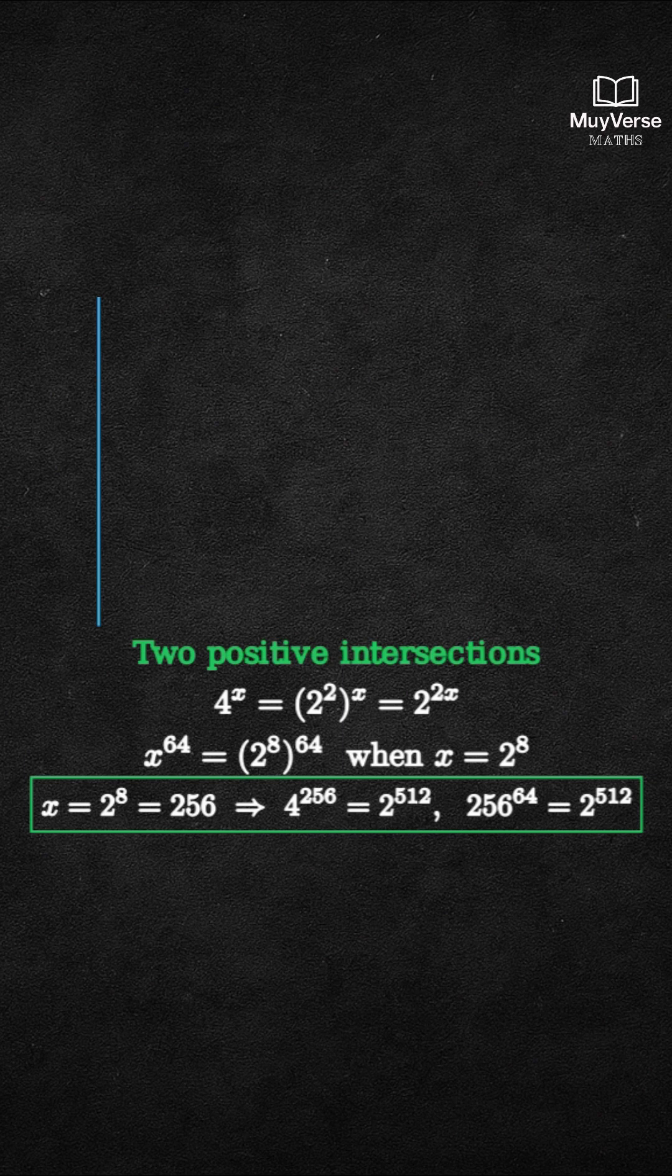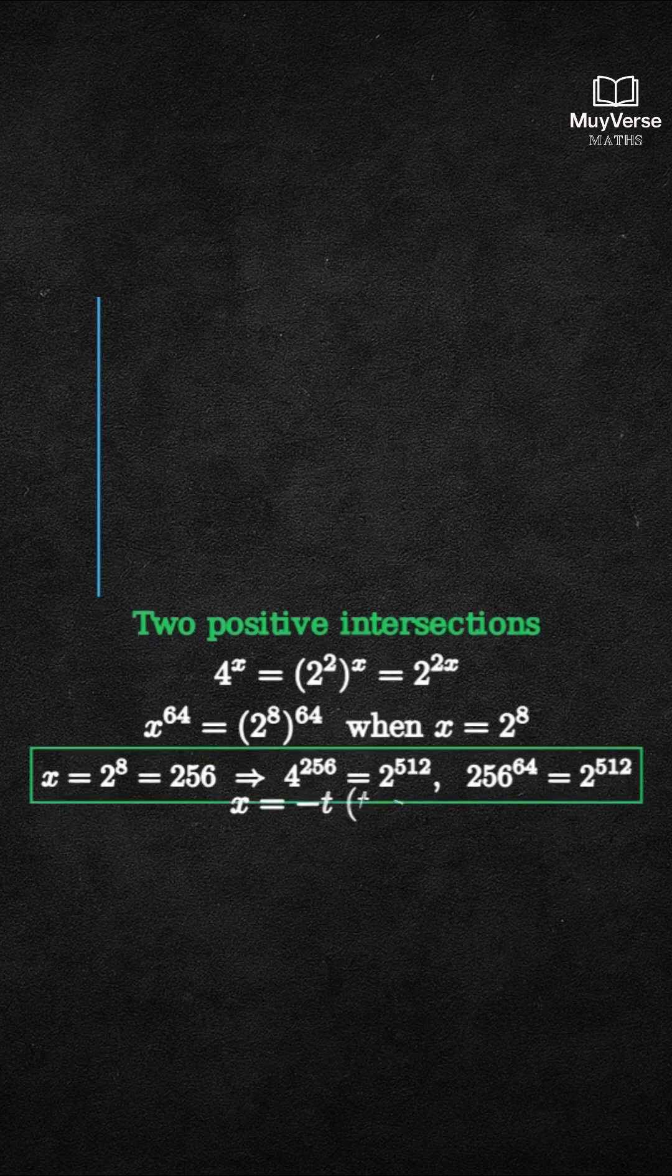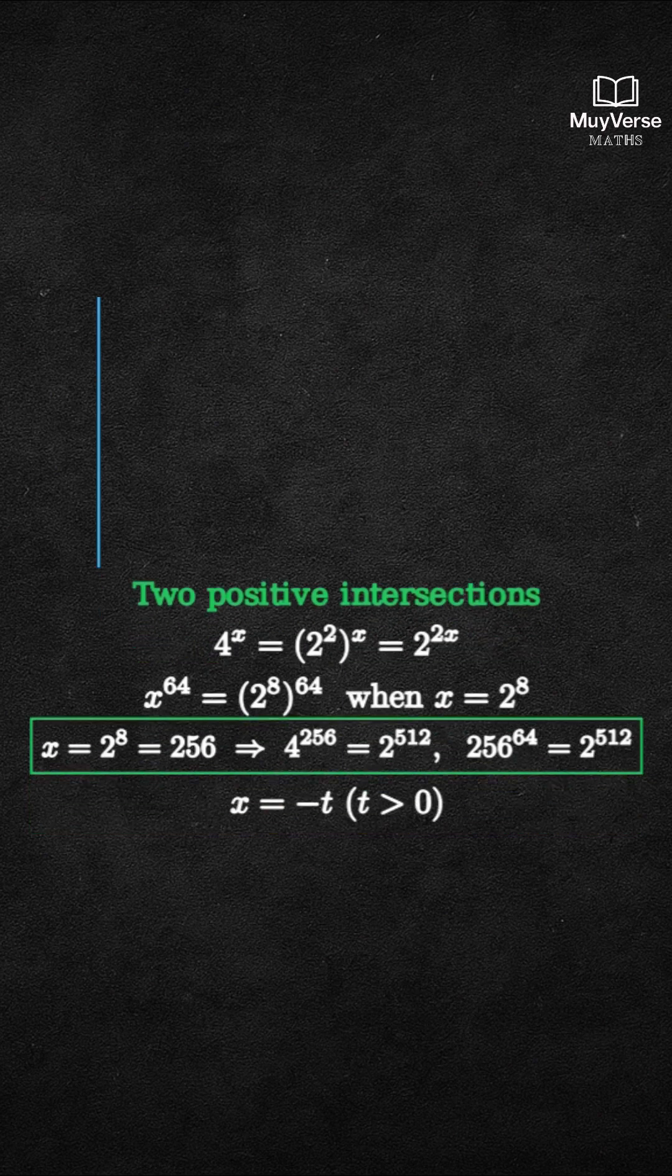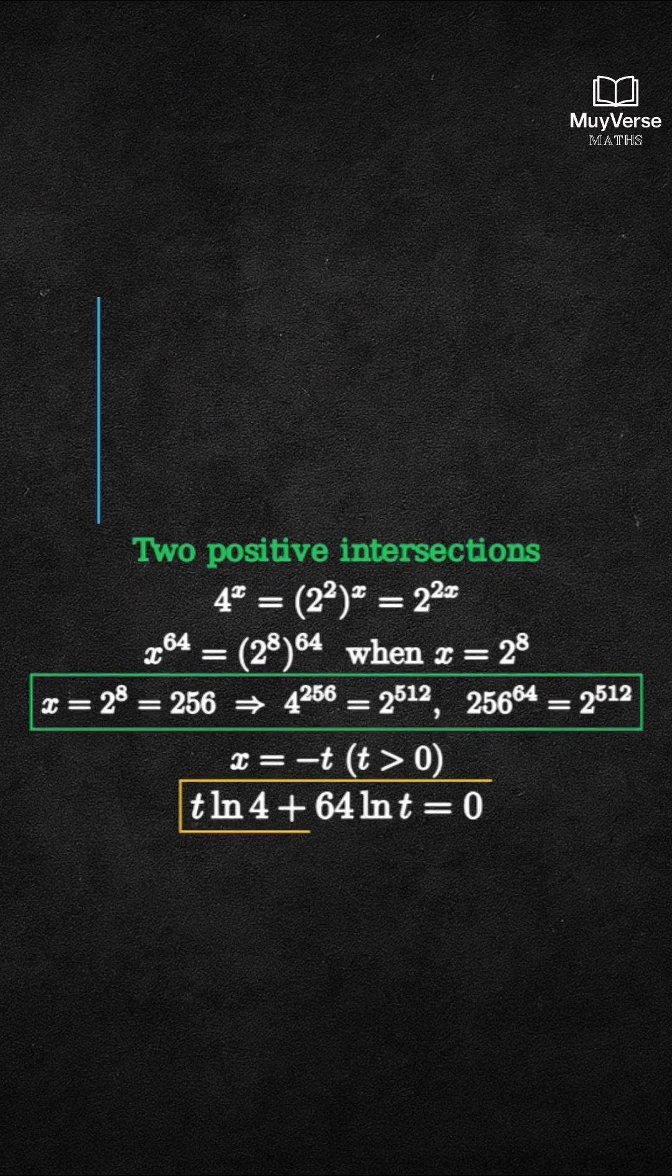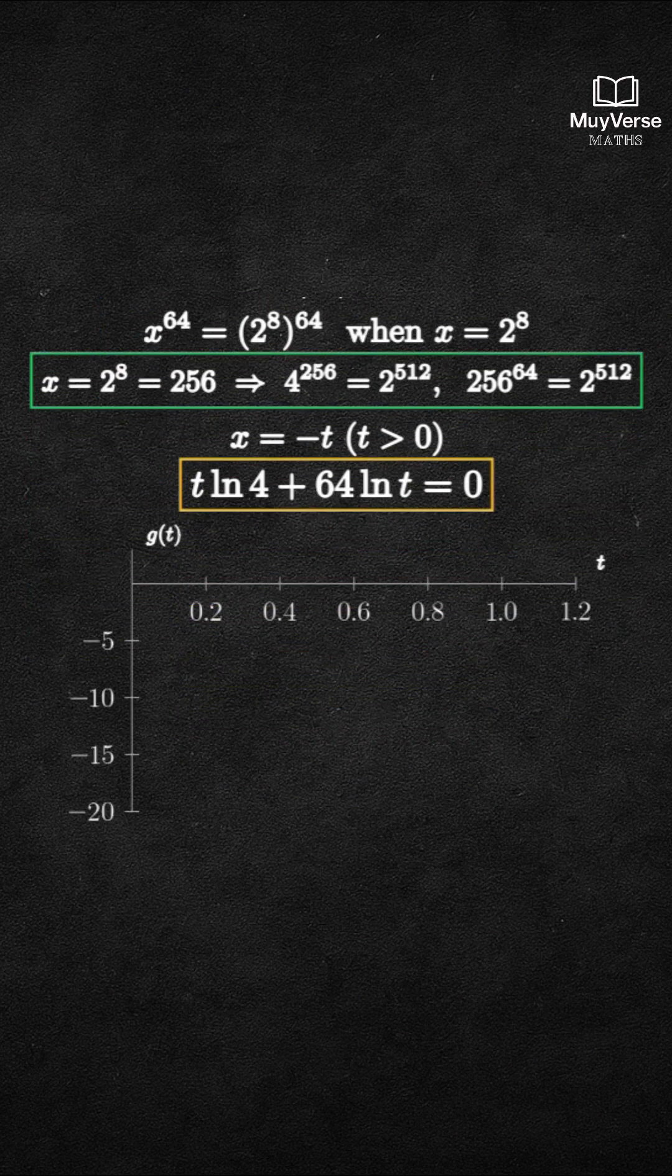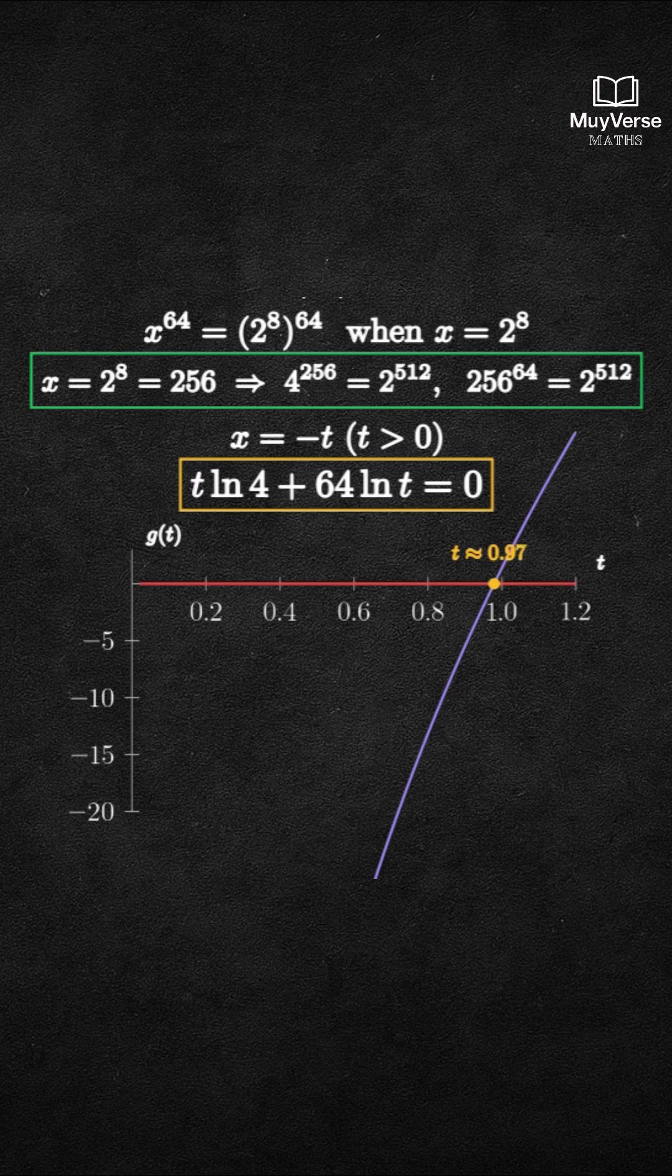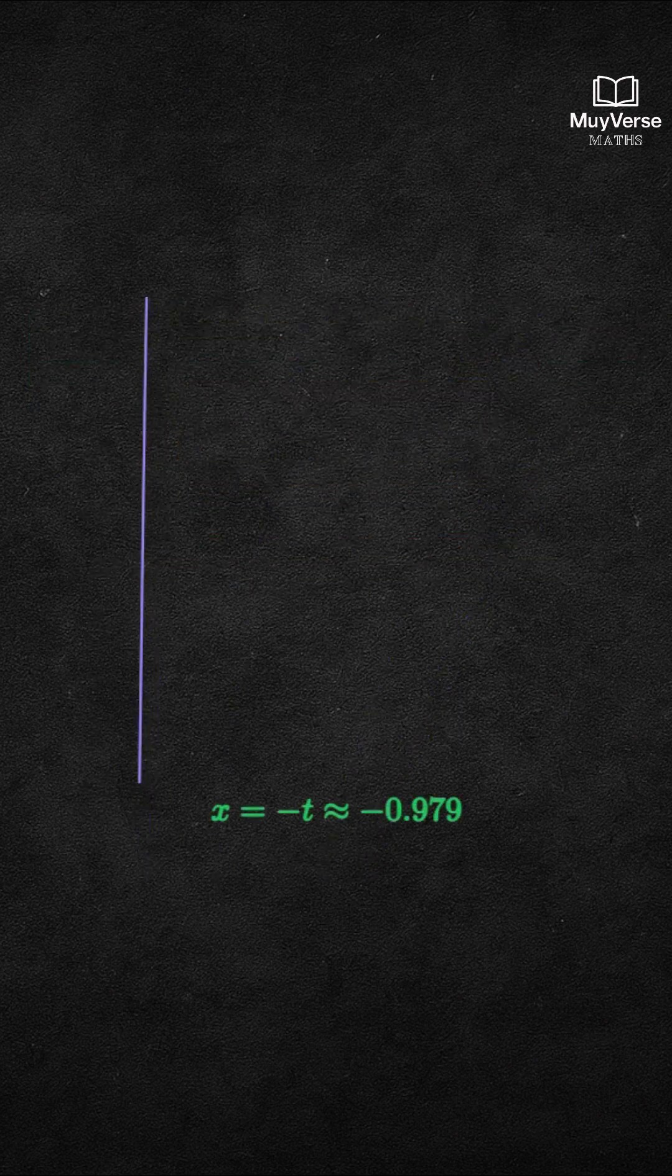Step 5. What about negative x? x^64 stays positive, so a negative solution is possible. Set x equal to minus t with t positive. Then the equation becomes t ln 4 plus 64 ln t equals 0. Plot this from 0 to 1. There is exactly one crossing. It occurs at t approximately 0.979. So x equals minus 0.979.